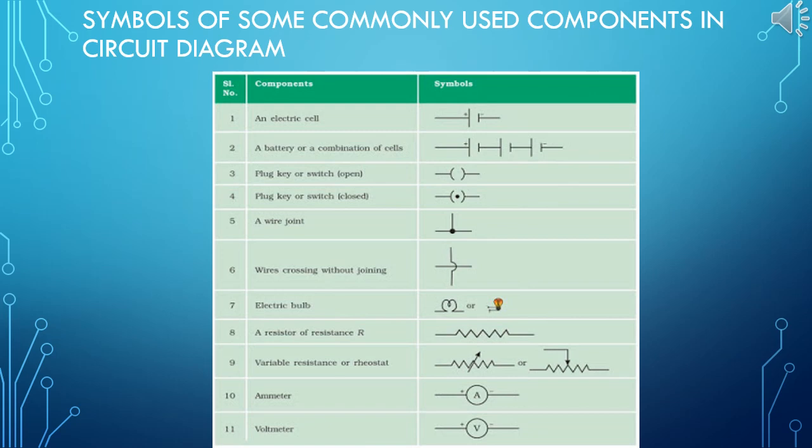Seventh one, electric bulb which is well known to you. Eighth one, a resistor of resistance R which is represented with a zigzag line, and you are going to learn much more about resistance in next video. Ninth one, variable resistance or rheostat which is given with an arrow mark where variable of resistance can be done. Tenth one, ammeter with positive and negative wires are given. Eleventh one, voltmeter, symbol V with a positive and negative representation of terminal. This ends the second video. I have given worksheet. Solve that worksheet in answer sheet.